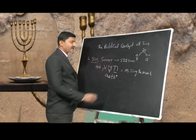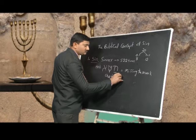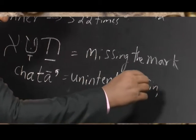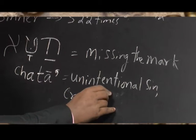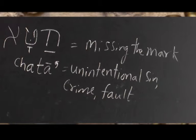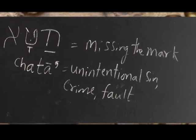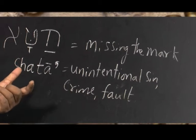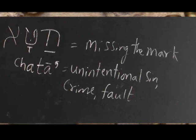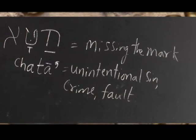The Greek equivalent is 'hamartia' — which carries the same meaning: missing the mark. God set a mark, and the word khata means you have missed that mark. It is used both in Hebrew as khata and in Greek as hamartia, and both mean missing the mark.